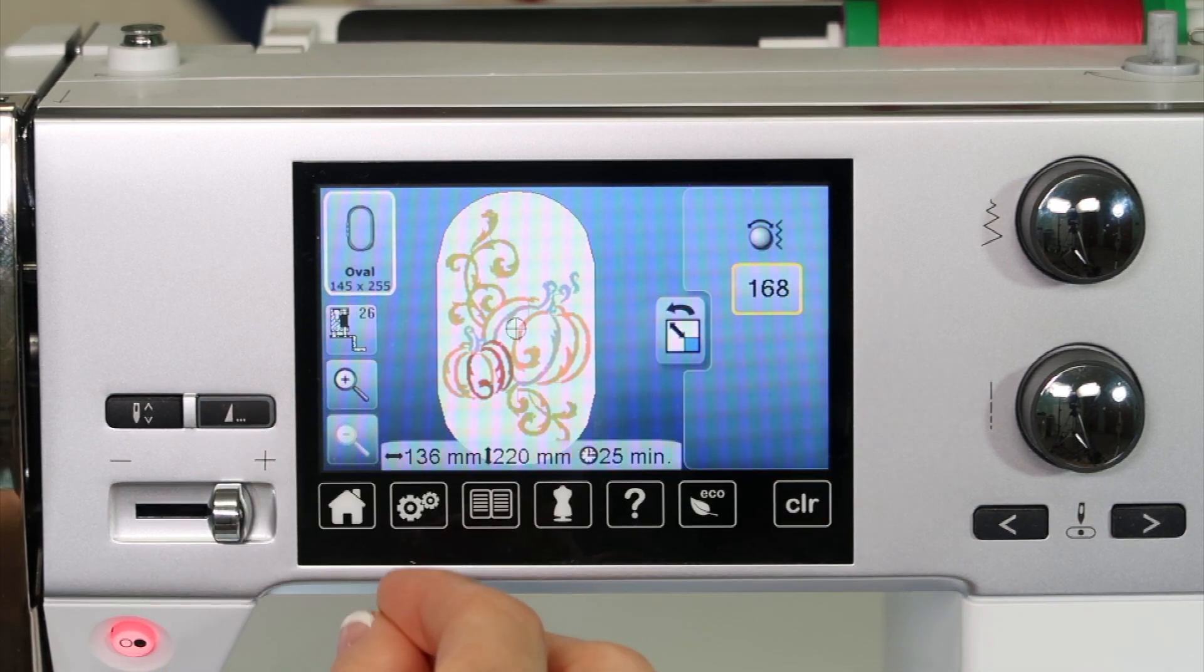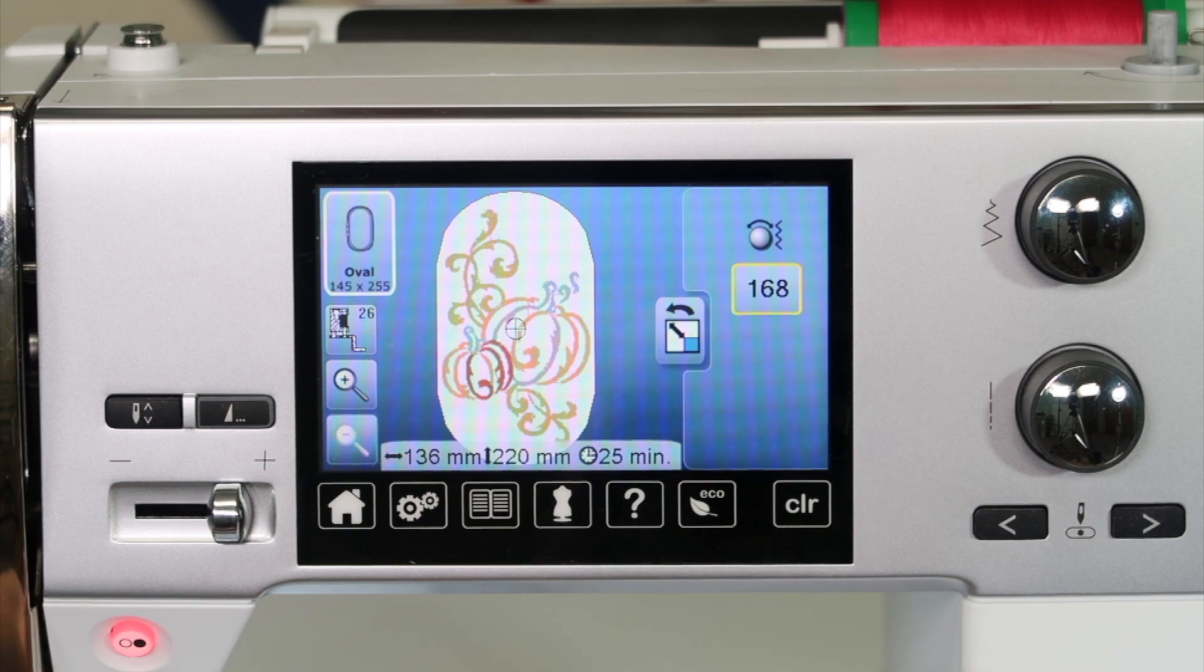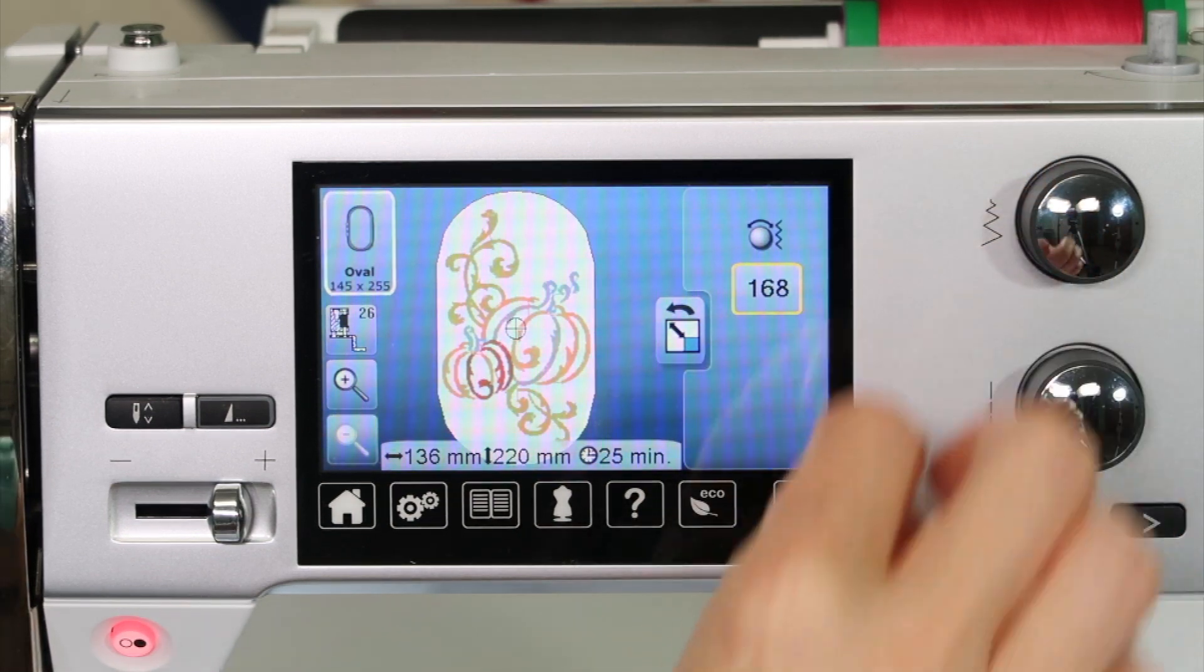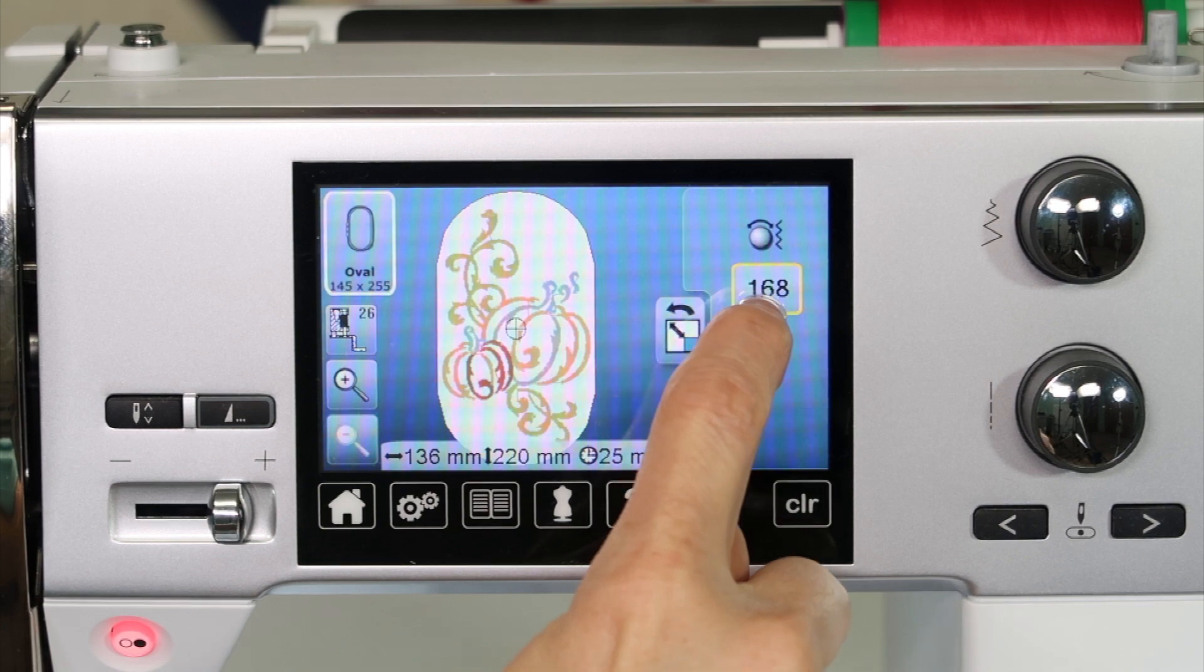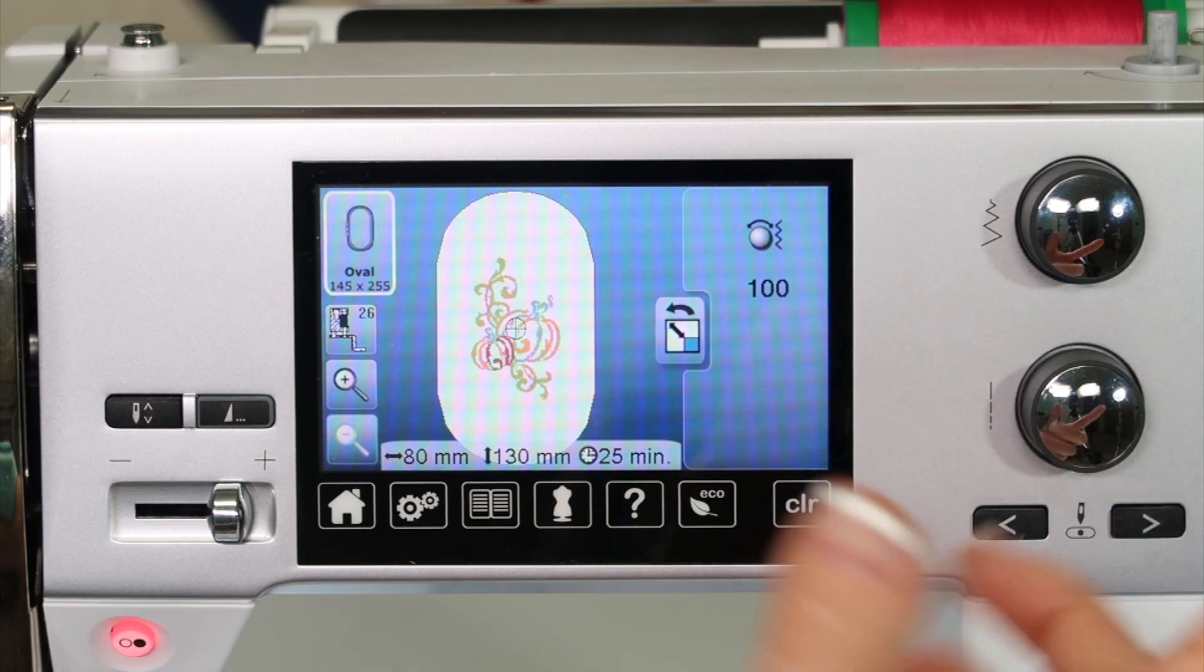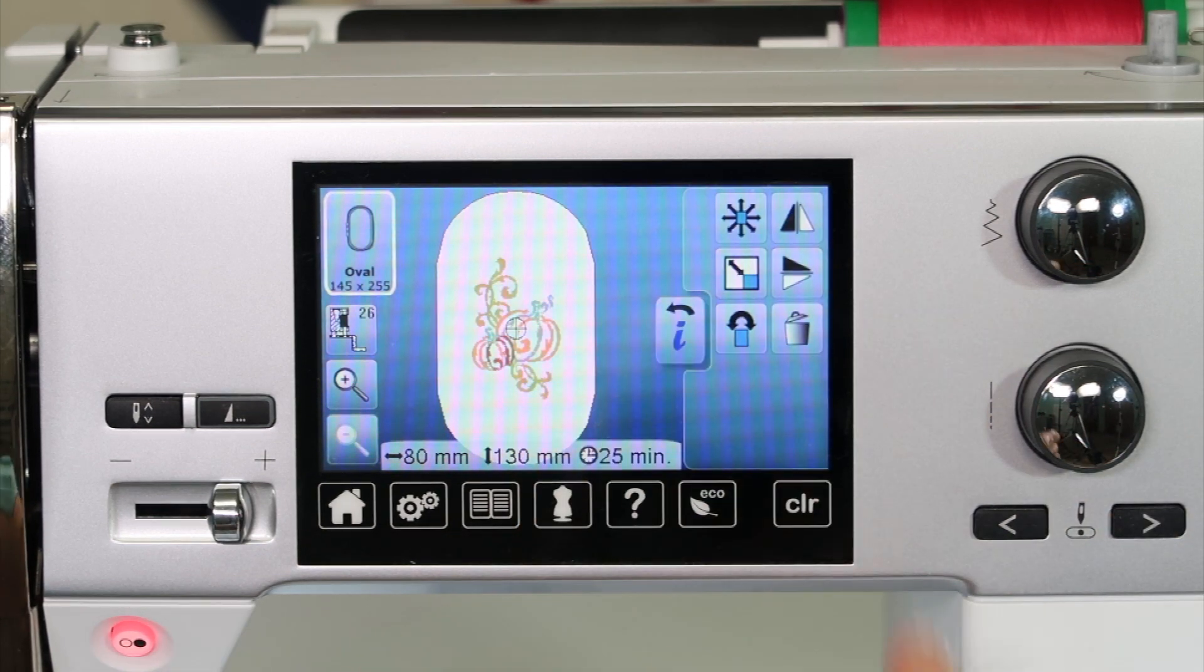Another thing is, if I want that back to normal size, it says 168%. Easiest way to do it, instead of turning the knobs to zero, is just touch the yellow box. Boom. Back to normal. That's that easy.